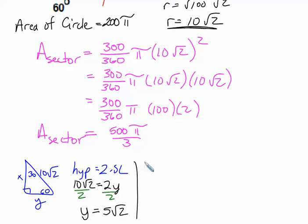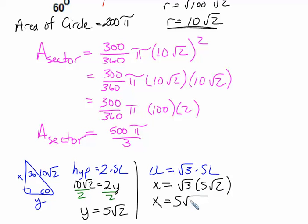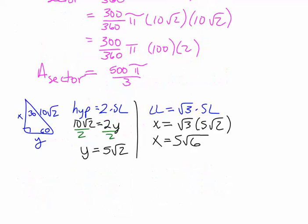Then we also know that the longer leg is equal to radical 3 times the shorter leg. In this problem, the longer leg across from the 60 is x. That's going to be radical 3 times 5 radical 2. Therefore, multiply the numbers inside the square roots. x is 5 radical 6.